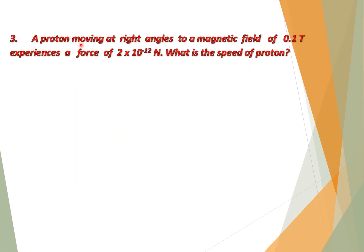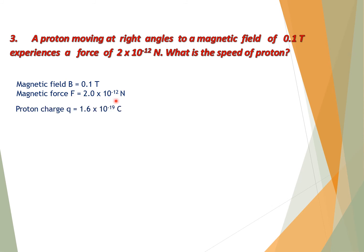Question number 3: A proton moving at right angles to a magnetic field of 0.1 tesla experiences a force of 2.0×10⁻¹² newton. What is the speed of the proton? Given: B = 0.1 T, F = 2.0×10⁻¹² N, proton charge Q = 1.6×10⁻¹⁹ C. We need to calculate the speed V of the proton.